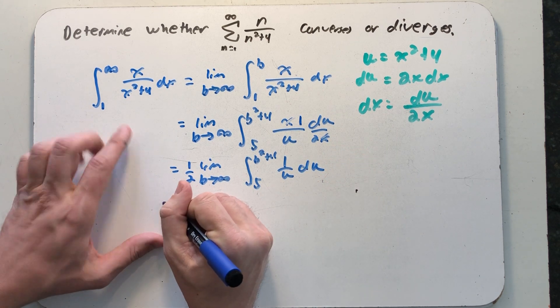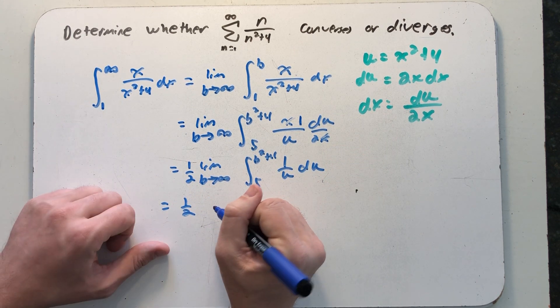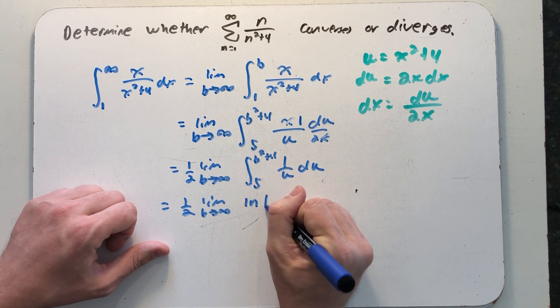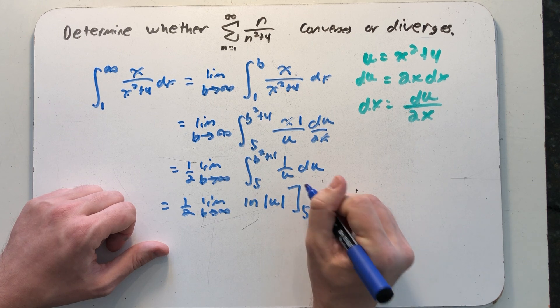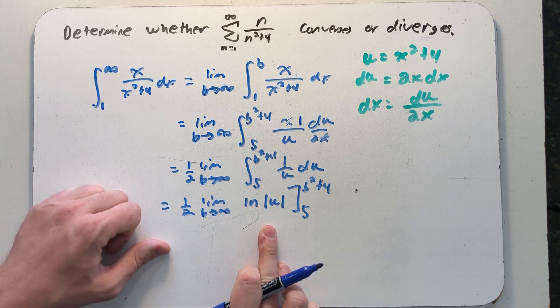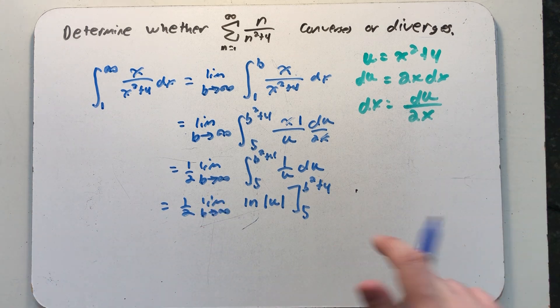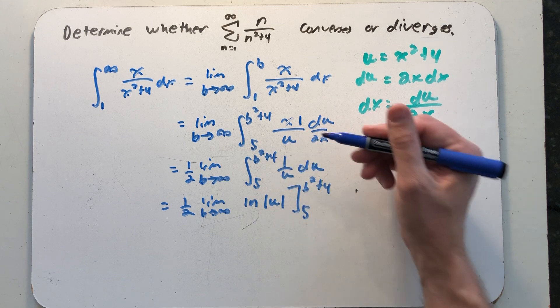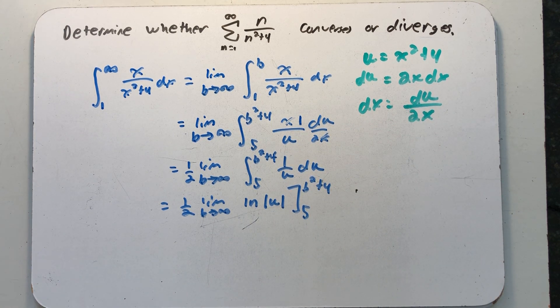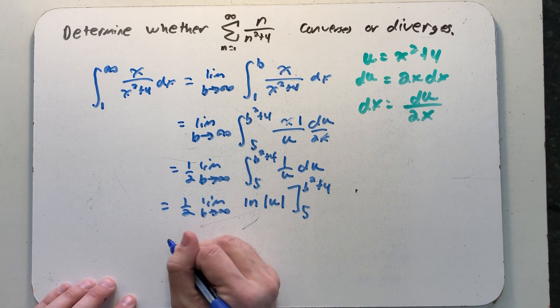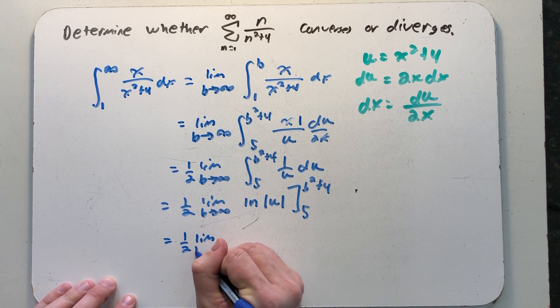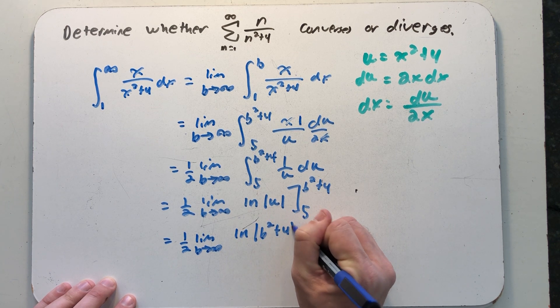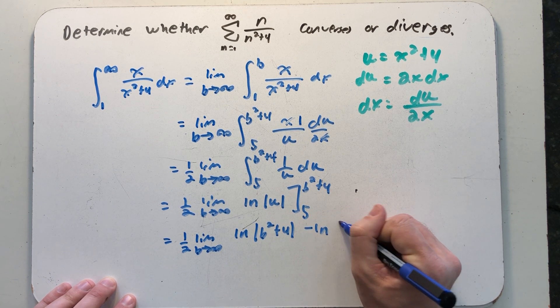Well the antiderivative of one over u with respect to u is the natural log of u. Better said, the natural log of the absolute value of u. Well even with that brief slip of the tongue I would be okay because b is running off to positive infinity. So 5 and b squared plus 4 here are definitely positive numbers. But I'm gonna leave that absolute value in there just to remind myself that it should be there on all such problems. All right, this gives me the natural log of b squared plus 4 minus the natural log of 5.